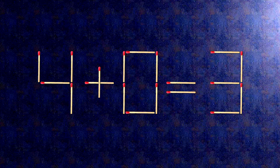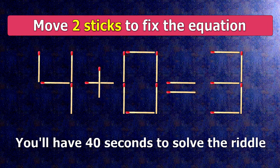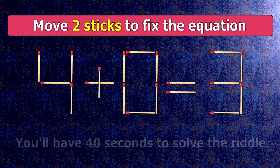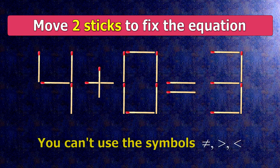We have the equality 4 plus 0 equals 3. Our equality is wrong. We need to move two matches to make our equality correct.